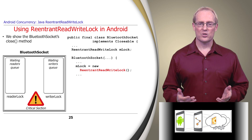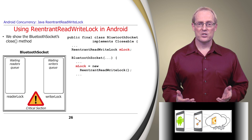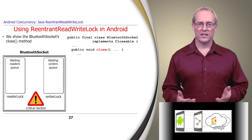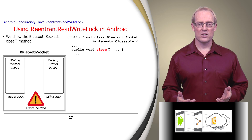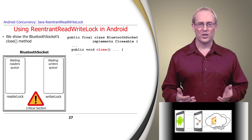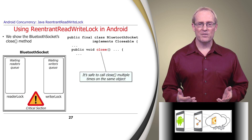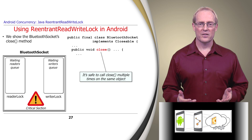BluetoothSocket's constructor creates a ReentrantReadWriteLock and stores it in the mLock data member. The BluetoothSocket close method releases any system resources it holds. Although only the first call to close has any effect, it's safe to call close multiple times concurrently on the same object.